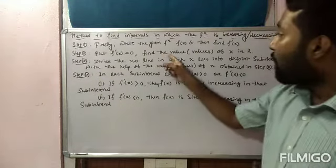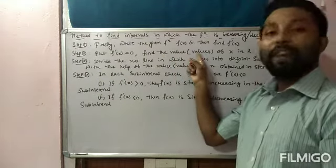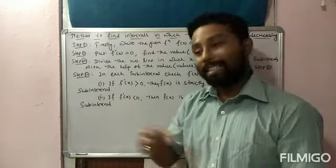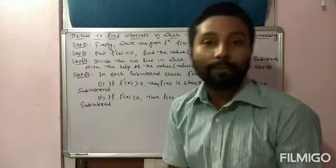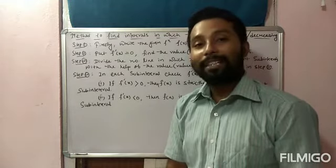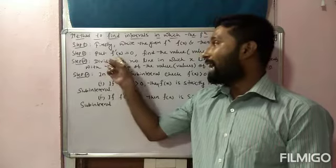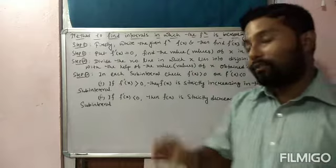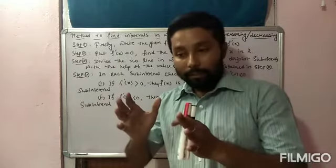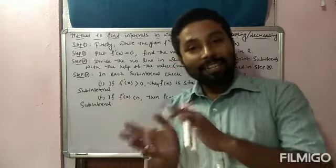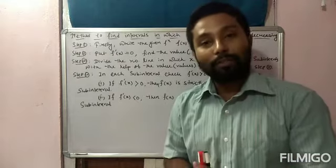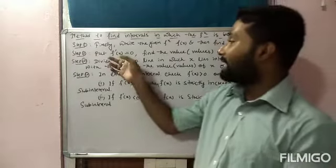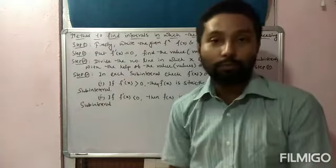Step 2: Put f'(x) equal to 0, to find the real values of x. We need these values of x because without them, we cannot differentiate the increasing and decreasing intervals. So we must set f'(x) = 0 and solve for x.